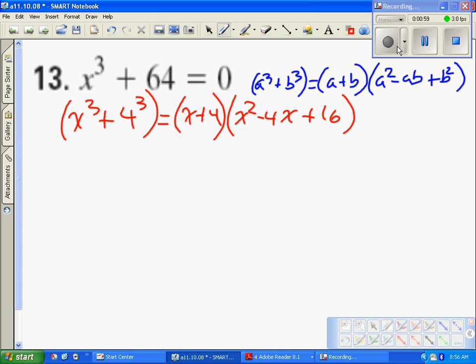Now we're supposed to solve also. So that's my factored form equals 0, and if we solve, x is equal to negative 4. We know that those are going to be imaginary solutions.